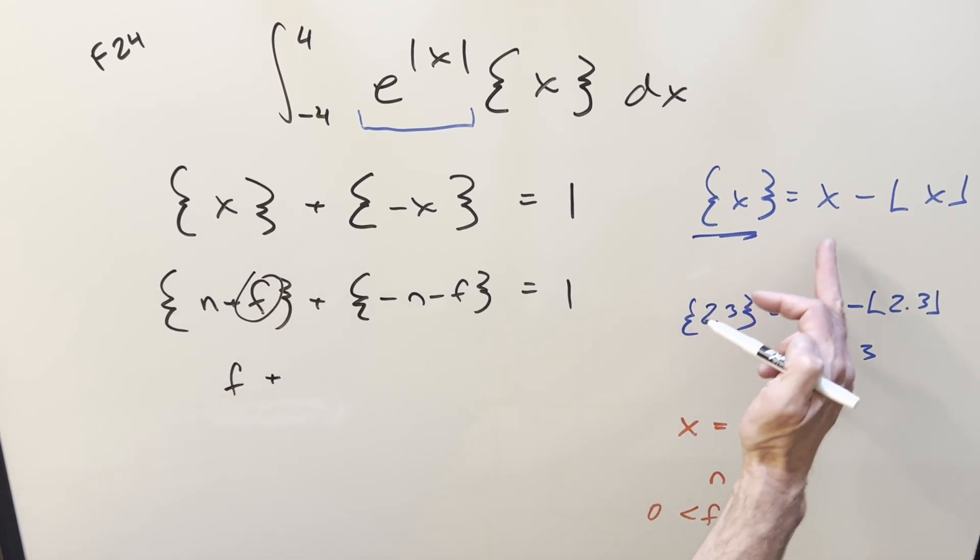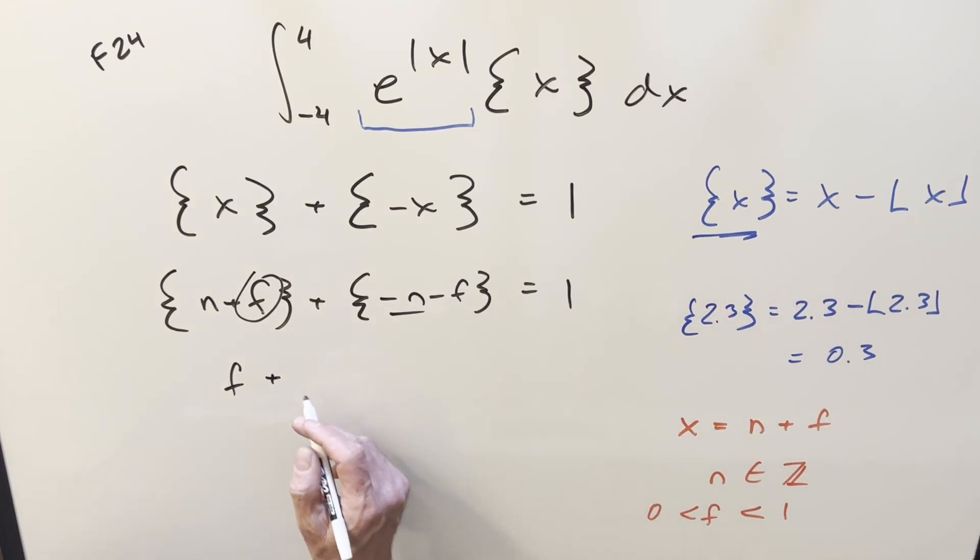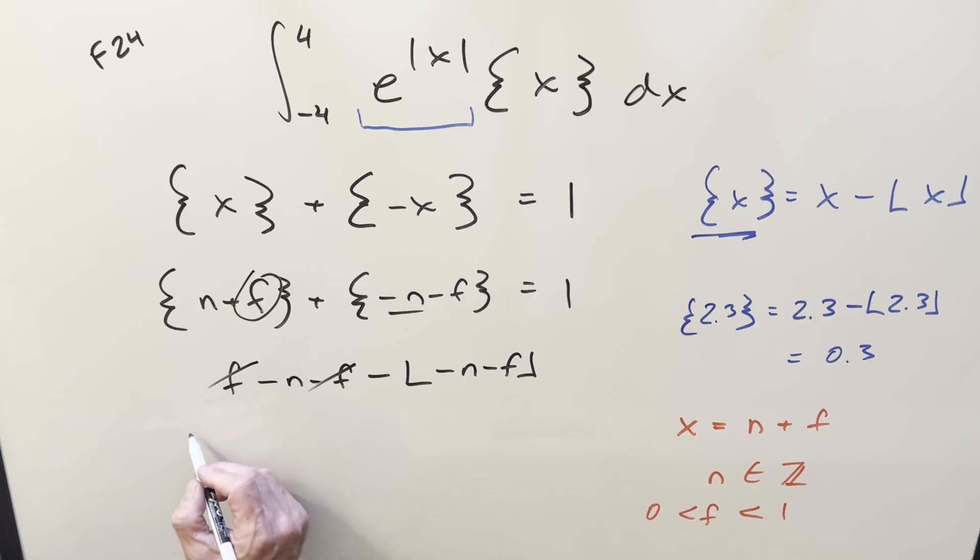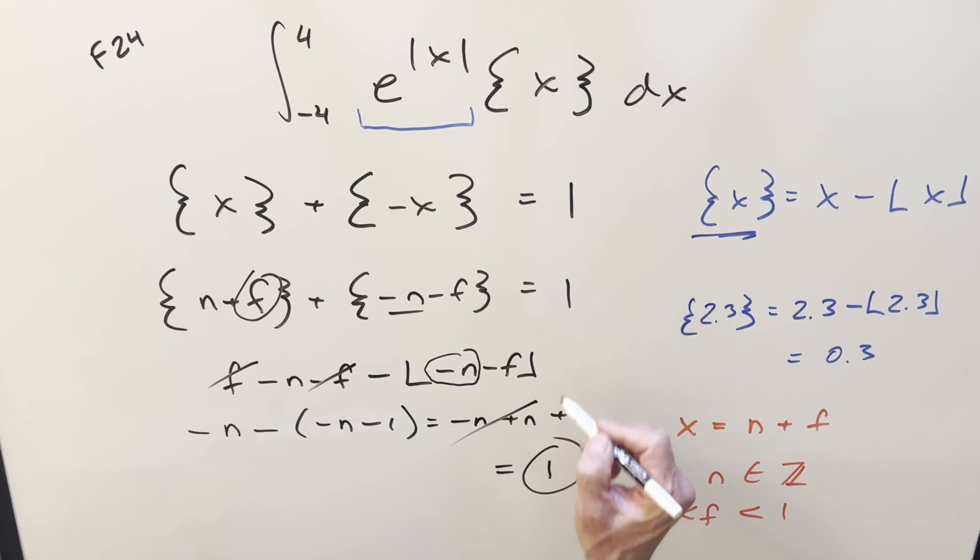For this one, we can use this definition. For the x part, we plug in the whole thing. We get back minus n minus f, then minus the floor function of this whole thing. We can cancel off the f's, and we have left minus n. Using the definition of the floor function, if this part is an integer and we reduce it by some part less than 1, then this whole thing becomes minus n minus 1, rounding it down. Distribute the minus sign in, we get minus n plus n plus 1. The n's cancel, and we're left with just 1. So this always works, as long as x is a non-integer.